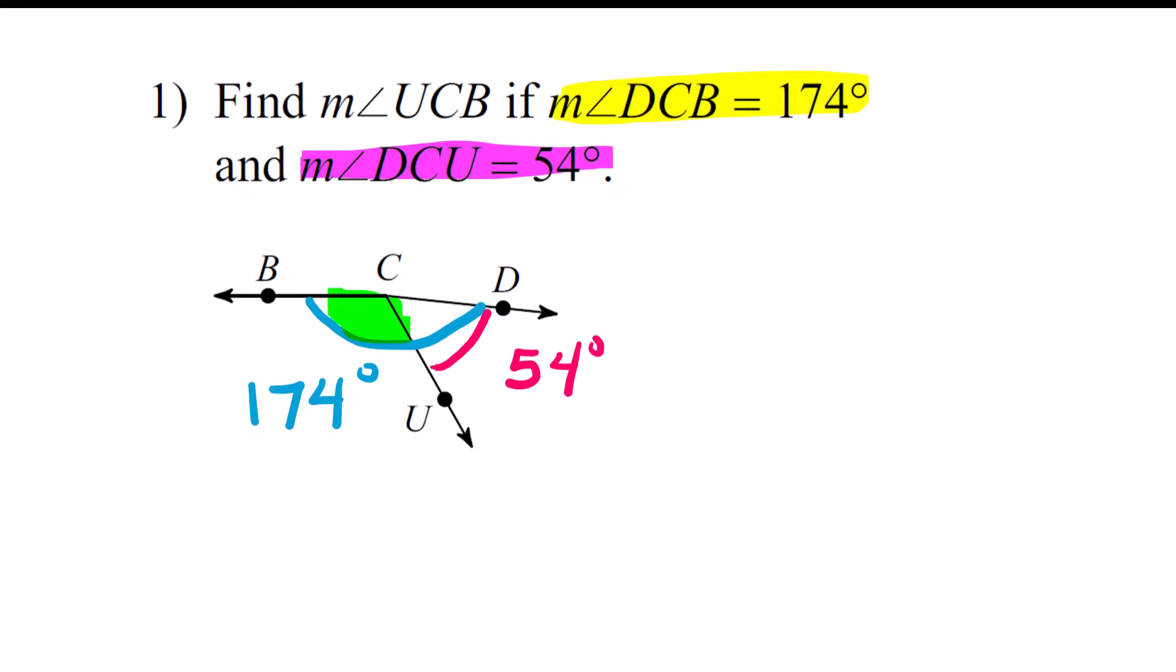So what I've done here is I've taken the information that they've given me. DCB is 174 - well, DCB is the entire angle, so that's the 174. DCU is this angle right here, I've done it in pink, that's 54. And we want to know what UCB is. UCB, this green angle, is not the 174 but the part of the angle that when you add it to 54 is going to give you 174. Now you're probably doing it in your head, but you need to know how to write this up because they're not always going to be like this.